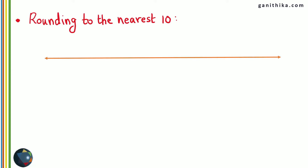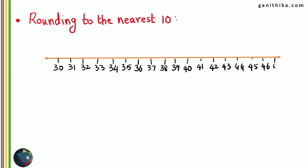Consider the number line. Say for example, we have numbers from 30 all the way to 47 and so on — there are numbers on both sides. In this case, if we have numbers from 35 to 44, these set of 10 numbers can be rounded off to the nearest 10. The nearest 10 in this set of numbers is 40.